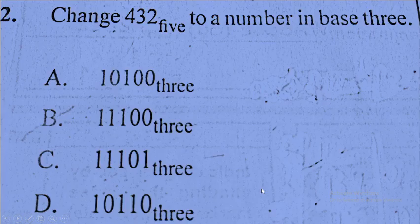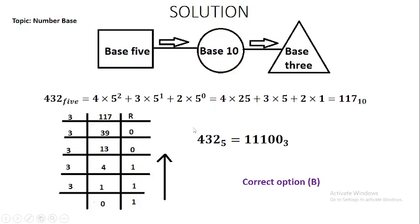So 432 base five equals 11100 base three. The correct option is B.